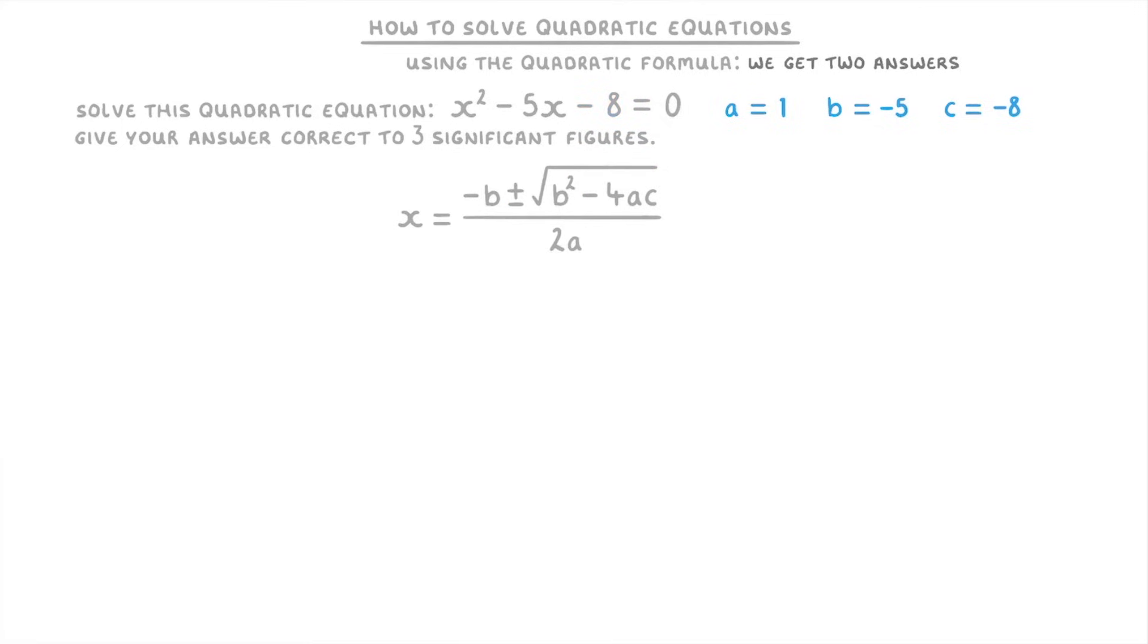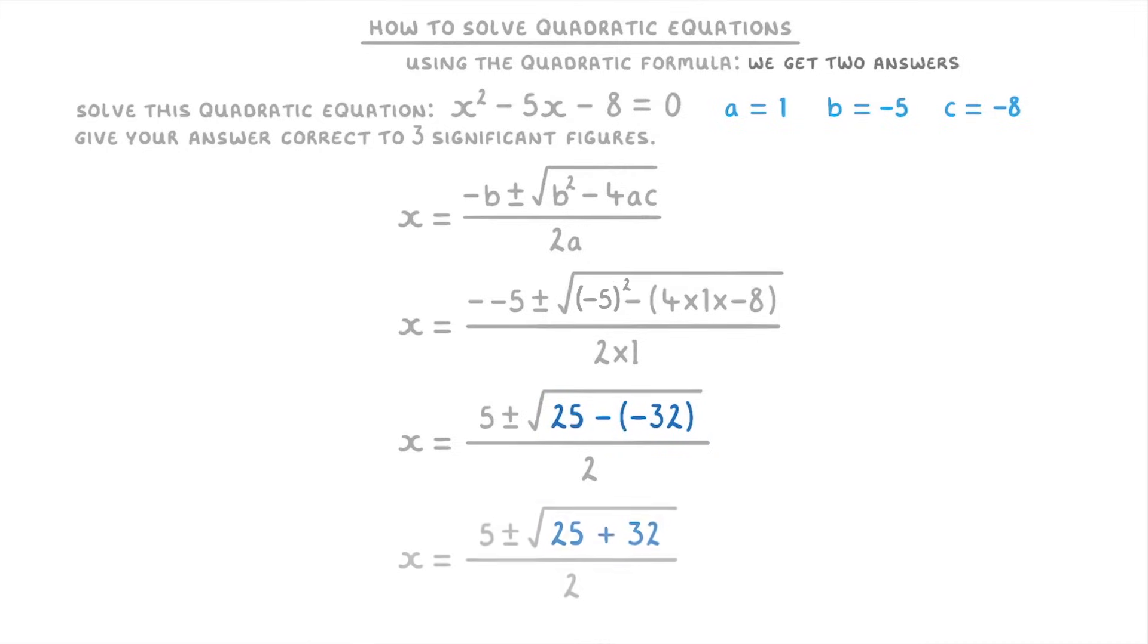Then you want to write out your formula and plug in all of your values. So x = -(-5) ± √((-5)² - 4×1×(-8)), all divided by 2×1. Which then simplifies to x = 5 ± √(25 - (-32)) all over 2. And then we can simplify this bit in the square root again to 25 + 32, or 57.